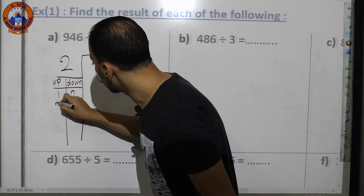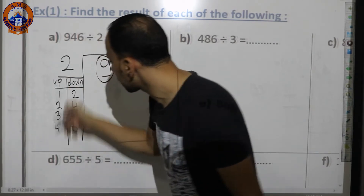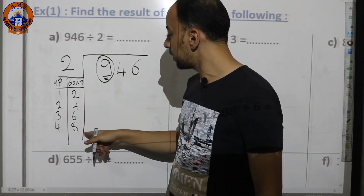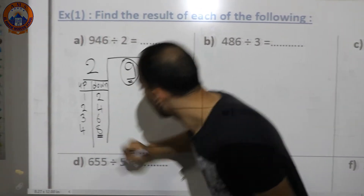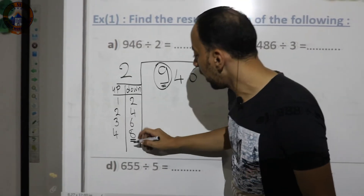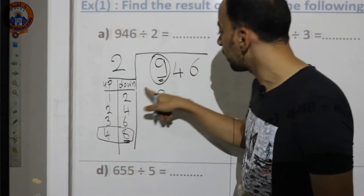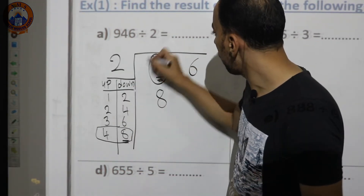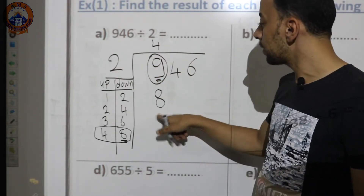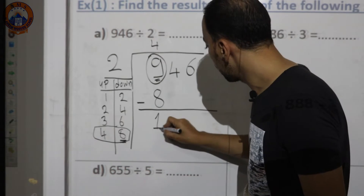I'll make the times table of 2 to help: 2×1=2, 2×2=4, 2×3=6, 2×4=8. I search for 9 in the table — 9 isn't there, but 8 is the closest. So I put 8 down and 4 up. Then multiply: 4×2=8. Subtract: 9−8=1.